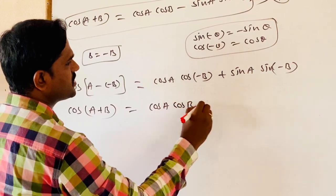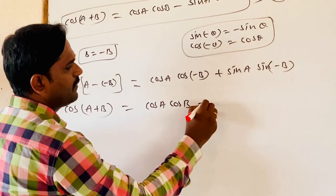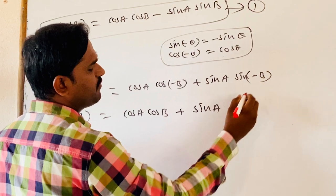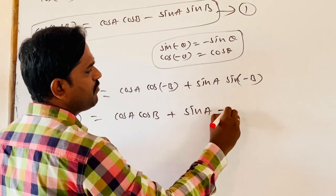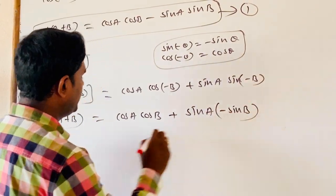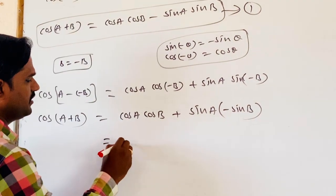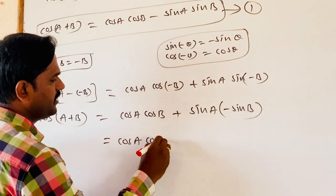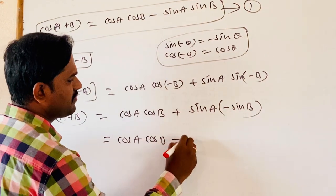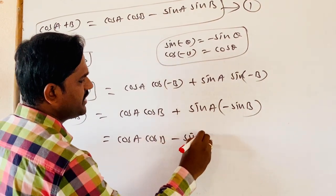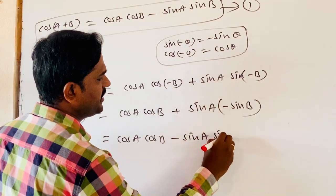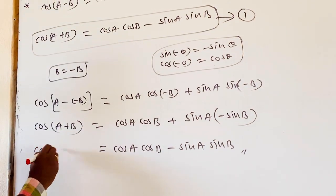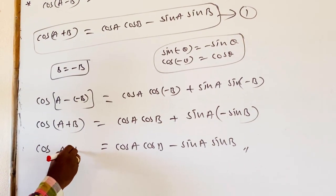We can write as cos A cos B, plus sin A times sin(minus B), whose value is minus sin B. Then finally, cos A cos B plus (minus sin A sin B), which gives us the cos of A minus B identity.